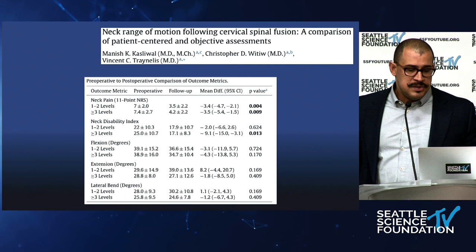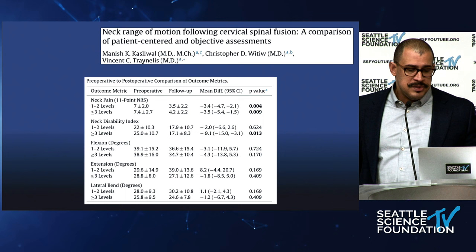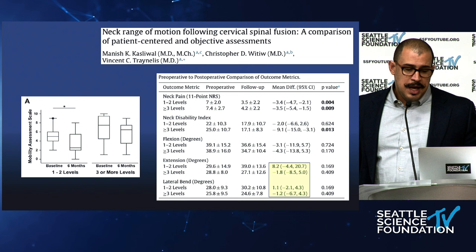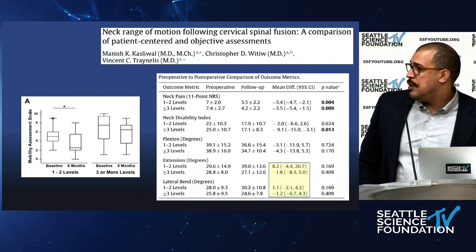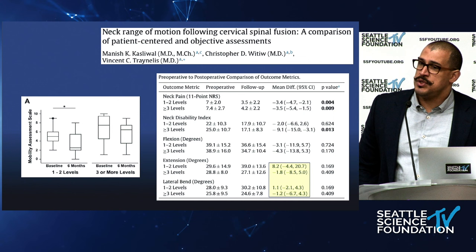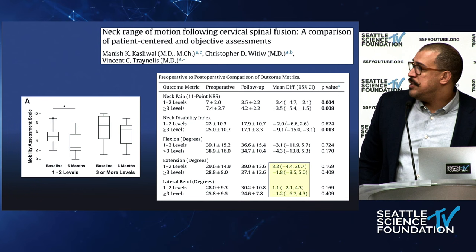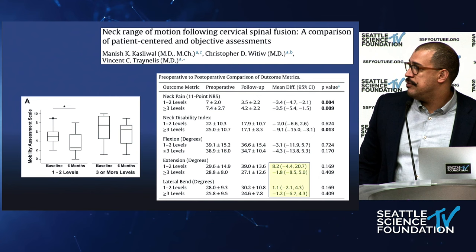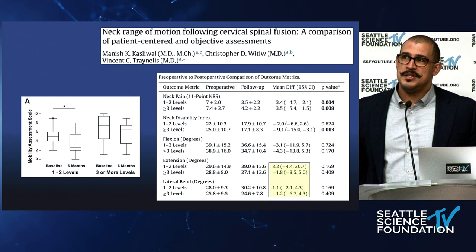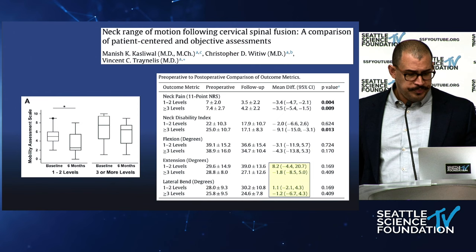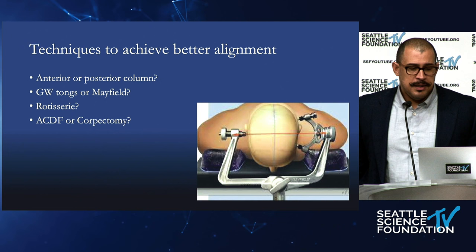This looks at neck range of motion where they fused a mean of three levels and measured range of motion afterwards. Generally we think that fusing the spine means losing motion, but I wanted to highlight that looking at extension and lateral bending, patients were actually gaining range of motion because they are less painful. By doing appropriate alignment and fusing degenerative cervical segments, you can actually improve range of motion despite removing a motion segment — which can be counterintuitive.